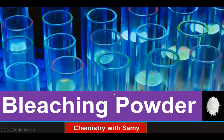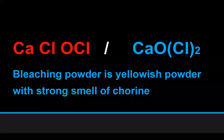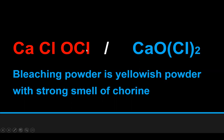Today the topic we are going to discuss is bleaching powder. The simplest formula of bleaching powder is CaCl(OCl), also written as CaOCl2. Bleaching powder is a yellowish powder.